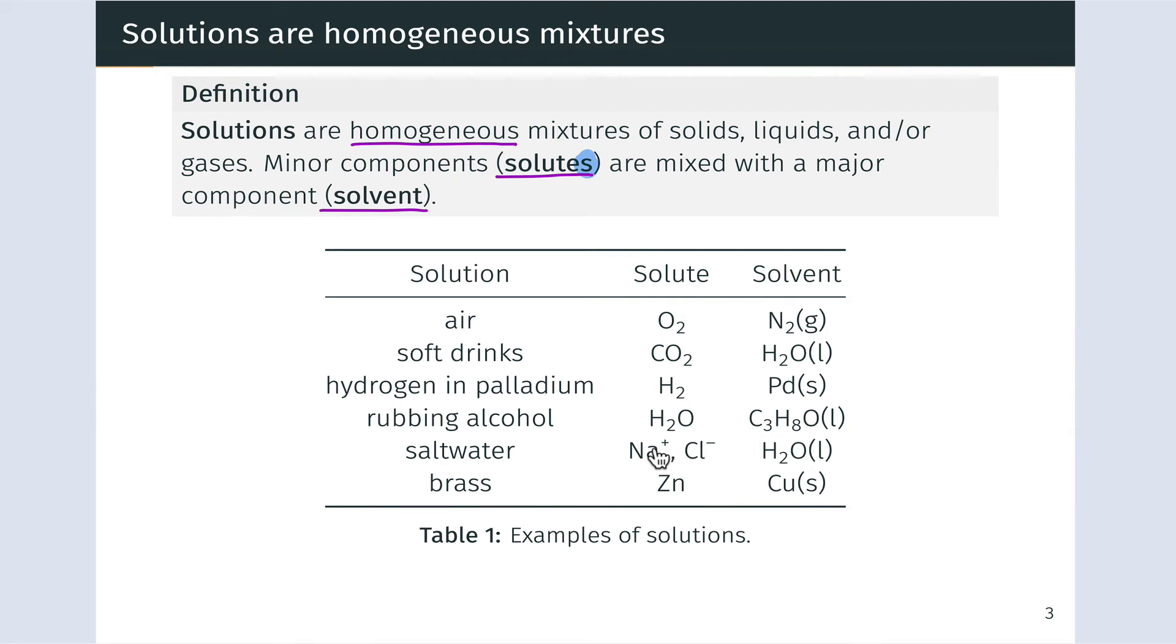Rubbing alcohol is a liquid-liquid solution with solute water dissolved in solvent isopropyl alcohol. Salt water is a solution of a solid, ionic solid, NaCl, in liquid water. And when those ions dissolve, they separate into aqueous Na+ and Cl-.